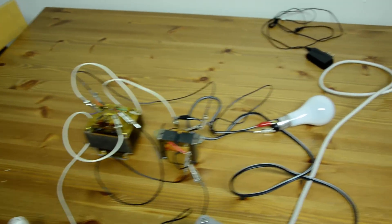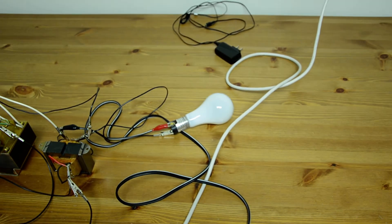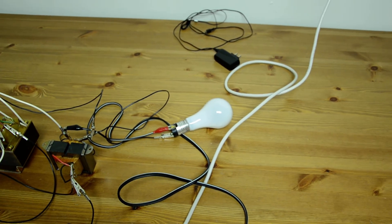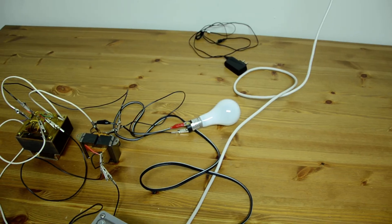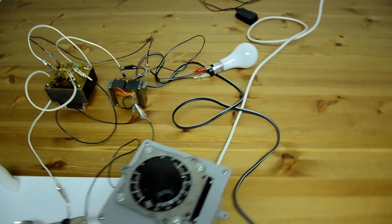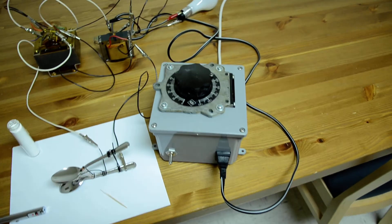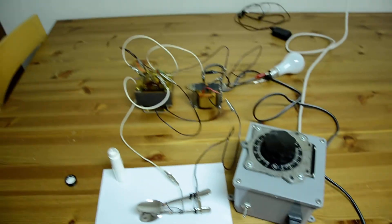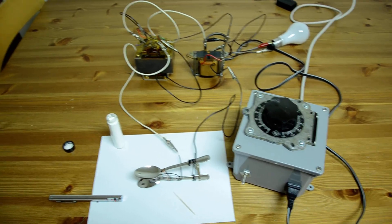These transformers are then placed in series with this light bulb on their primaries, just in case I short things out, I don't get too much current surging through. That's plugged into this variac, and that's really all there is to it.